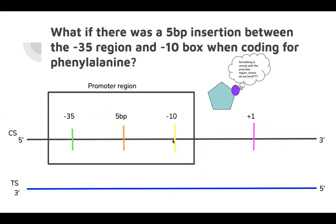But what would happen if there was a five base pair insertion between the negative 35 region and the negative 10 box of a gene that codes for phenylalanine? This changes the promoter region of the gene, thus changing the binding sites for transcription. When this happens, the gene cannot be properly transcribed, which means there will not be any phenylalanine properly made in the body. So this amino acid will not be present in the body.